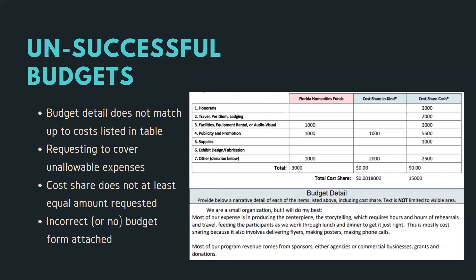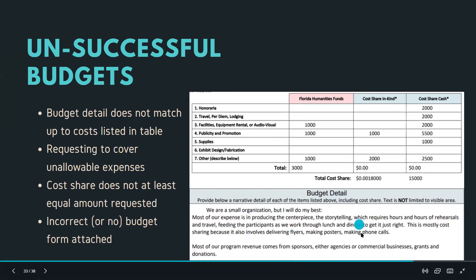An unsuccessful budget shows blanket costs where it's not quite clear where they'll be spent, and doesn't specifically describe where funds will go. Cost share is also not described. We really need you to be very clear and use all the budget detail space to describe the costs you are both requesting and recording as cost share.